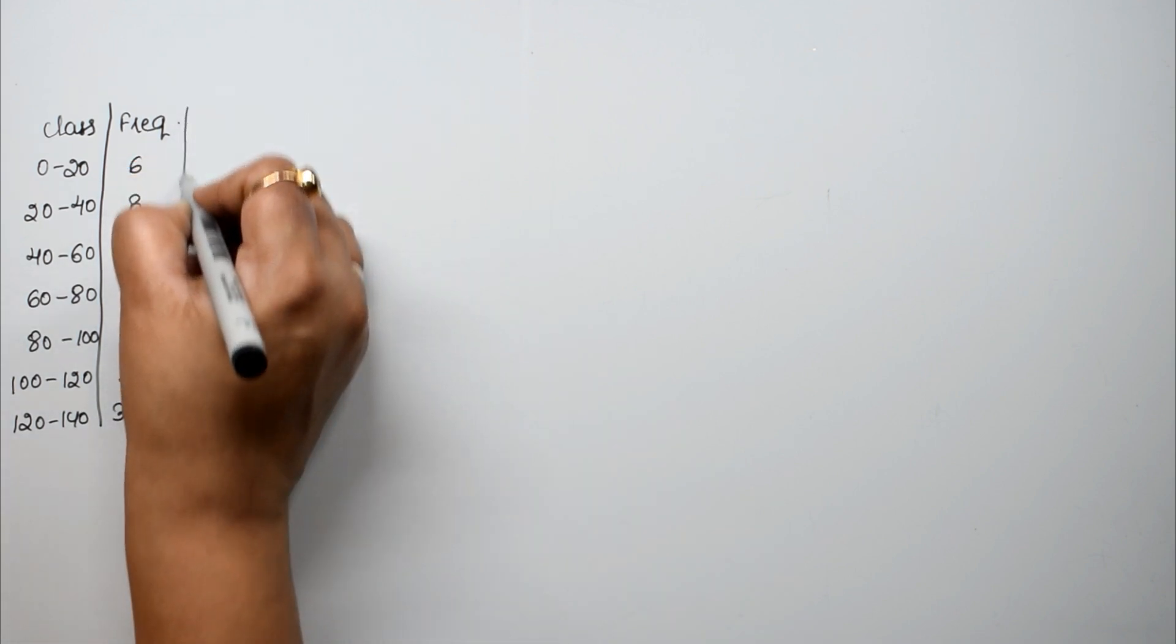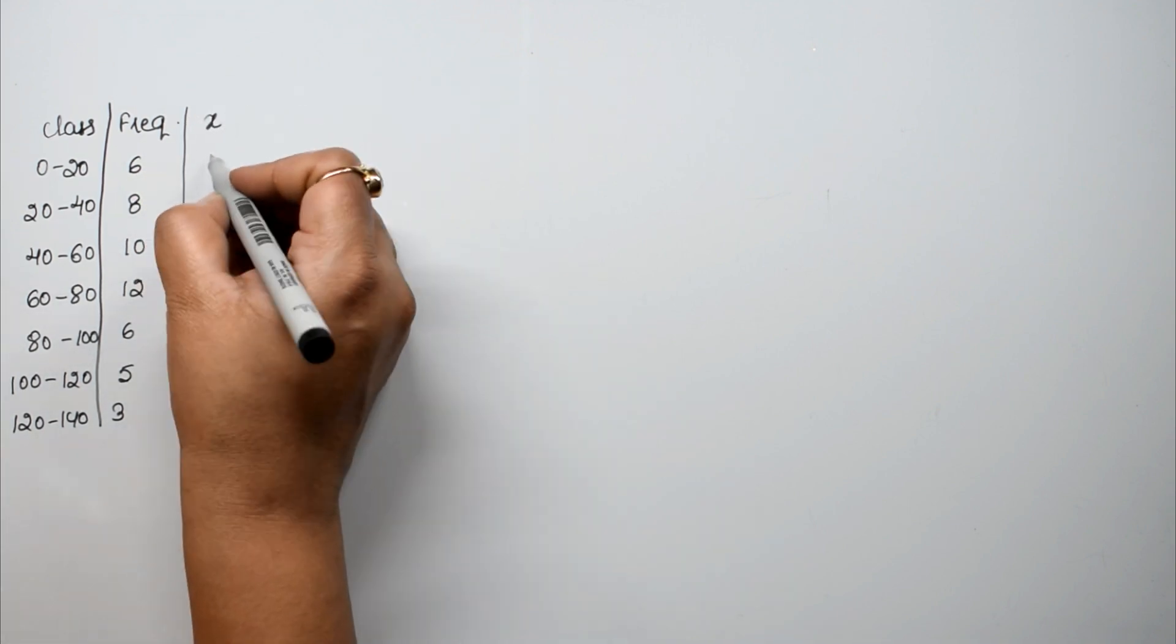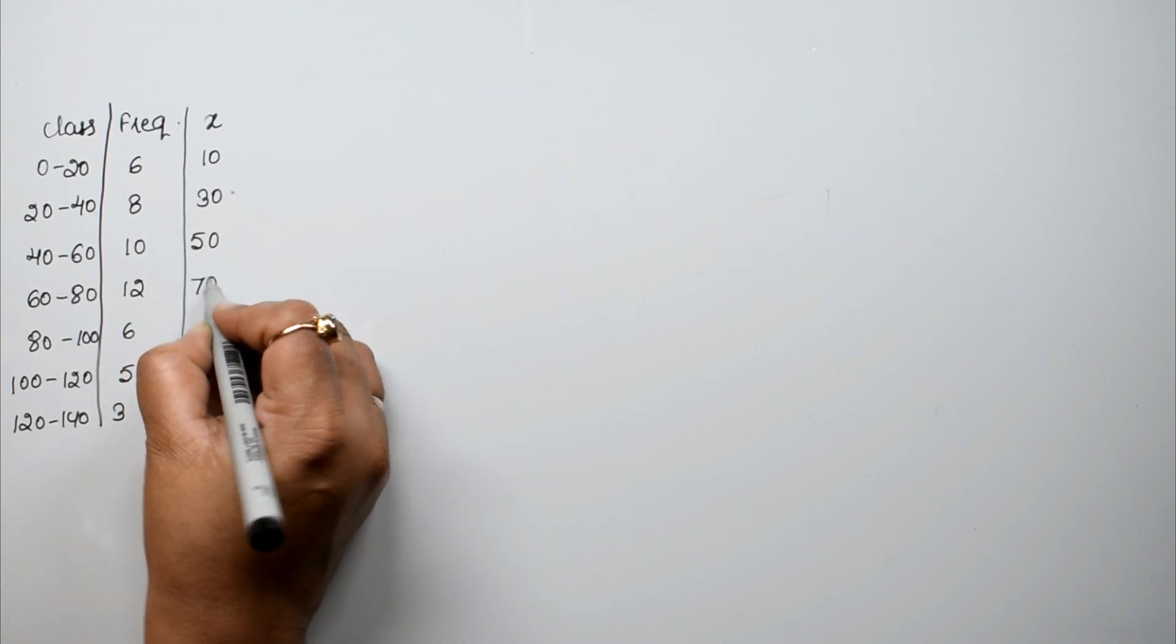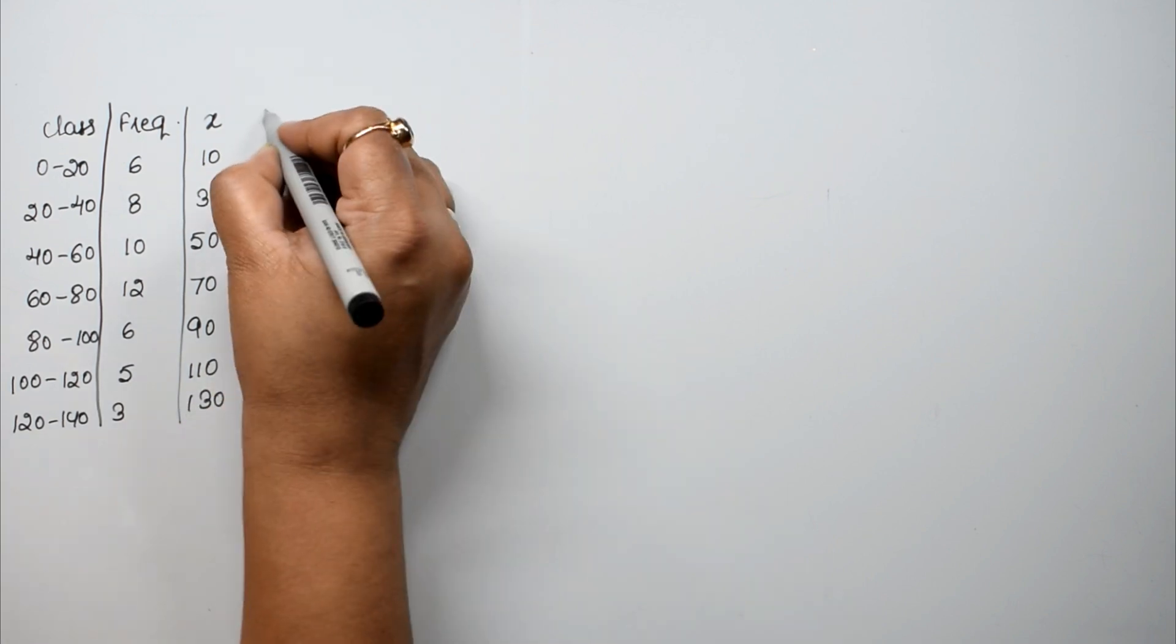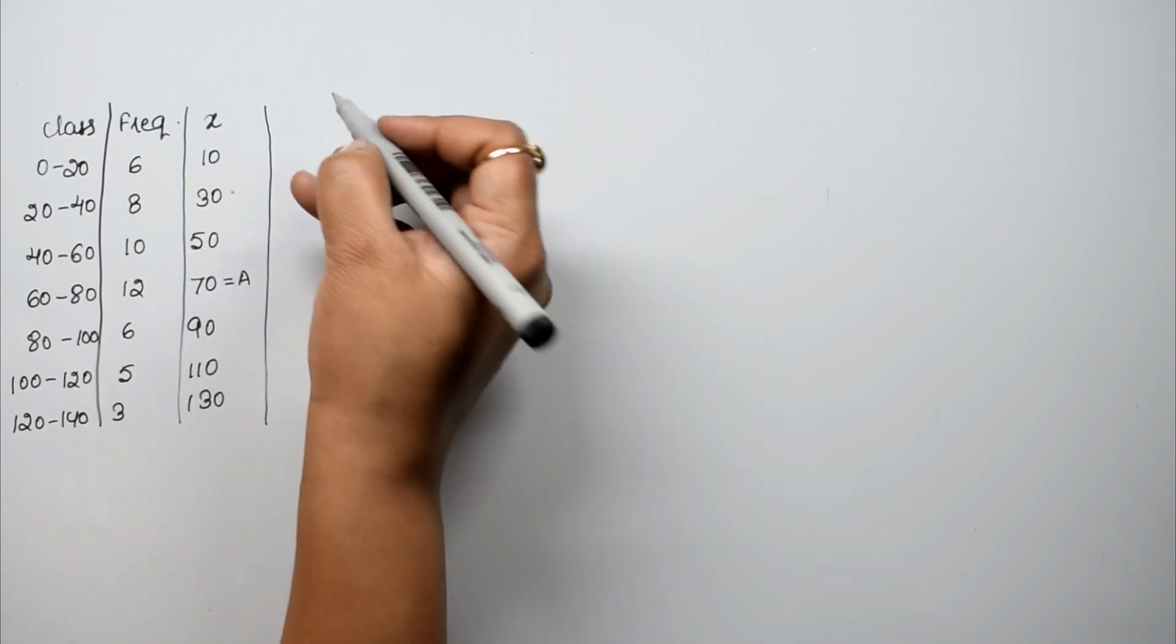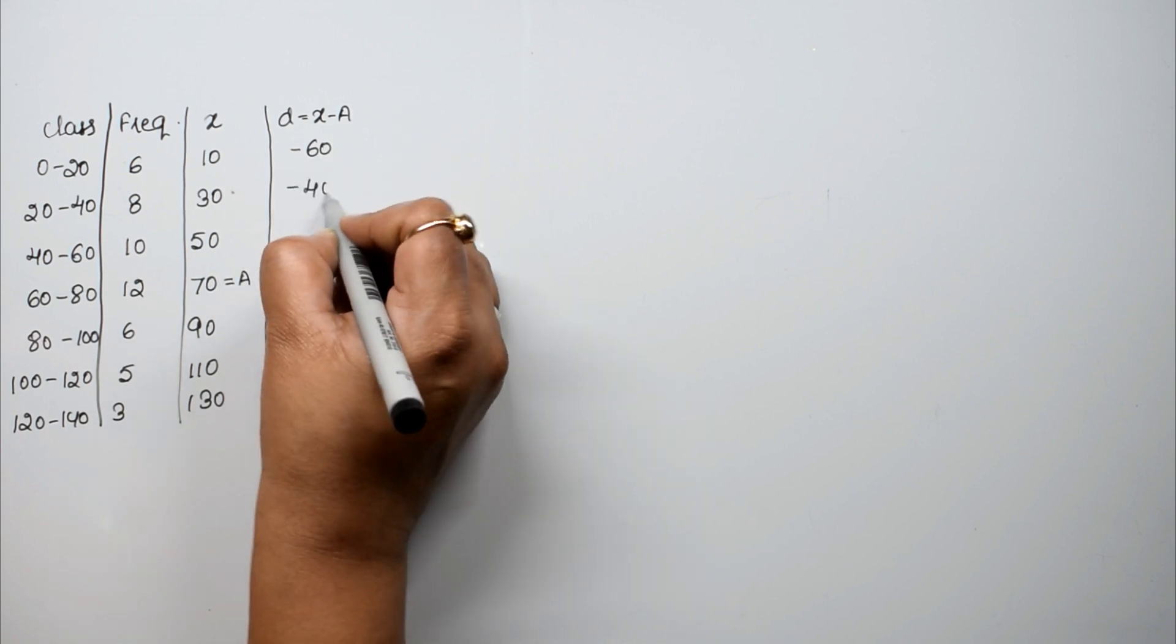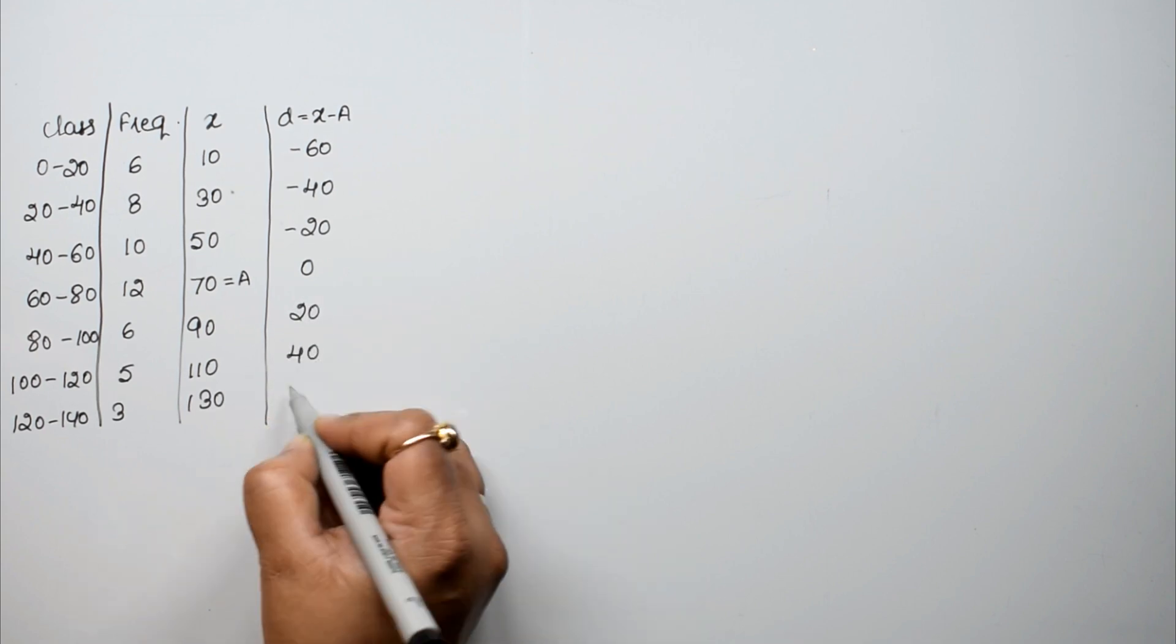Right, we have left mean. What did we do for mean? We had left x first. So x is our mid value. That is 10, 30, 50, 70, 90, 110 and 130. Now we have assumed mean. I have assumed mean 70. So how much is it? d equals to x minus a. So this is minus 60, minus 40, minus 20, 0, 20, 40 and 60.